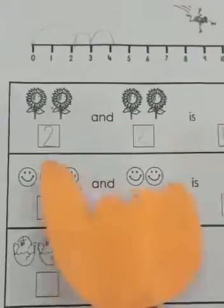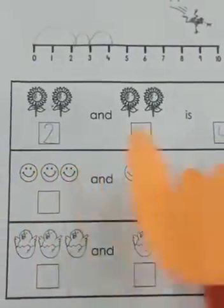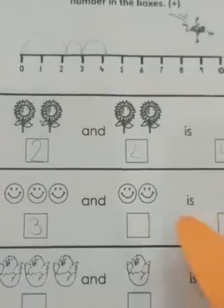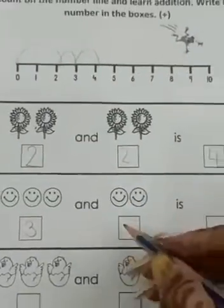Now the next one. 1, 2, 3. 3 smiley faces over here. 1, 2. 2 smiley faces over here.